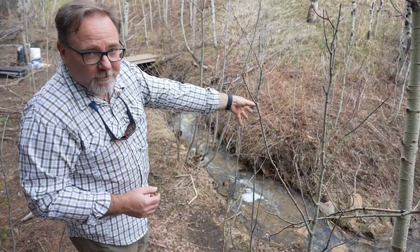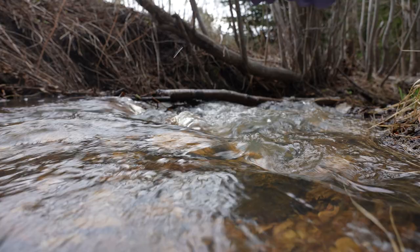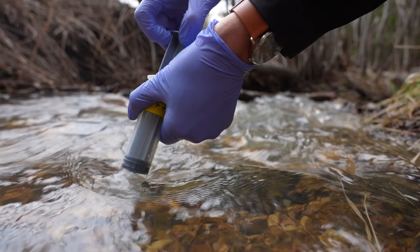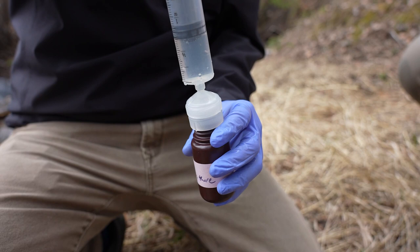In addition to quantifying in-stream transport processes, a stream tracer injection can also be used to evaluate the exchange of stream water and groundwater. One simple way to do this is to conduct an injection and look for where dilution occurs downstream. Another approach is to carefully track the mass balance of stream water and tracer mass passing each location compared to what was originally injected.